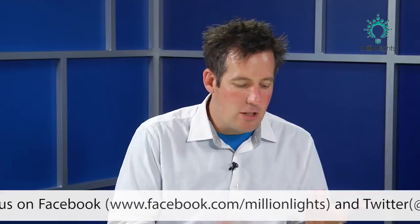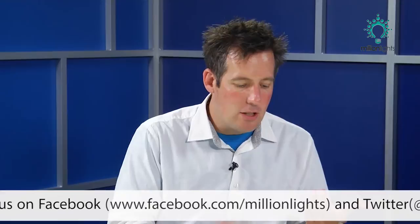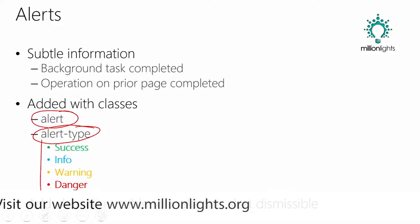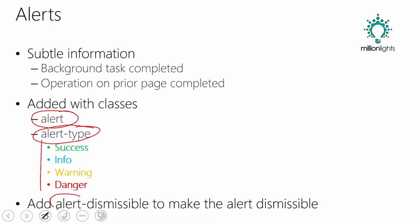In order to set this up, all that I need are classes. There are really just two main classes: number one is alert, and number two is alert type. You'll notice we've got success, info, warning, and danger with all the different colors listed. You also have the ability to make the alert dismissible — meaning if the user clicks on it, it will disappear — by just adding on the alert-dismissible class.